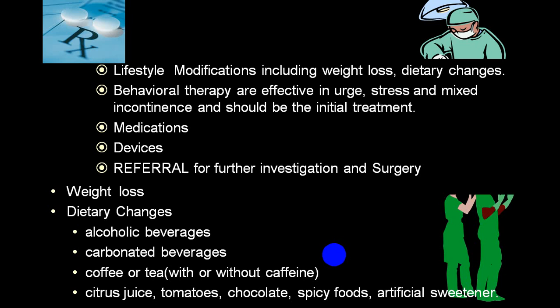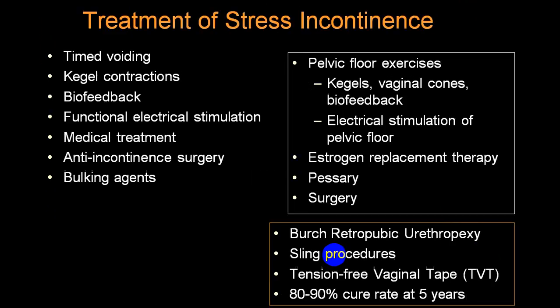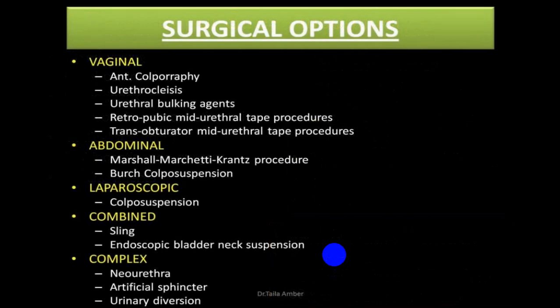Conservative treatment is preferred, followed by pharmacotherapy, and last is surgery. In lifestyle modification: weight loss, dietary changes - stop taking alcohol, avoid tea and coffee with or without caffeine, citrus fruits, chocolate, spicy foods, and artificial sweeteners. Pelvic floor exercises, electrical stimulation of pelvic floor, estrogen replacement therapy, and pessary are also used. If these do not work, surgery is indicated.